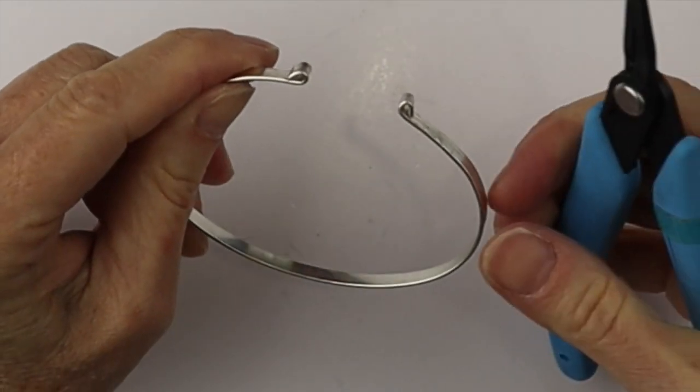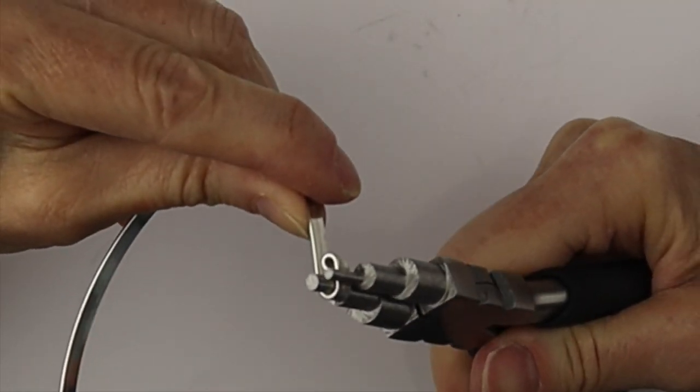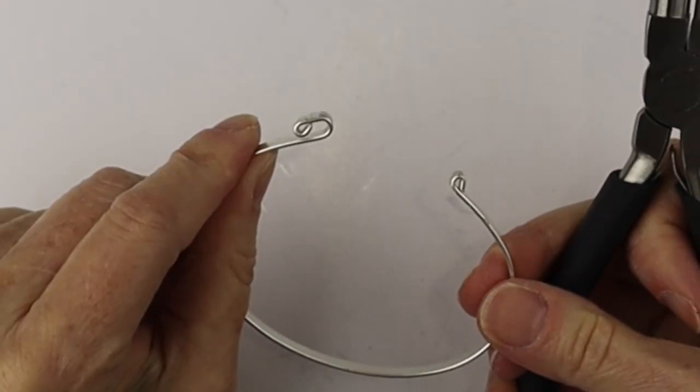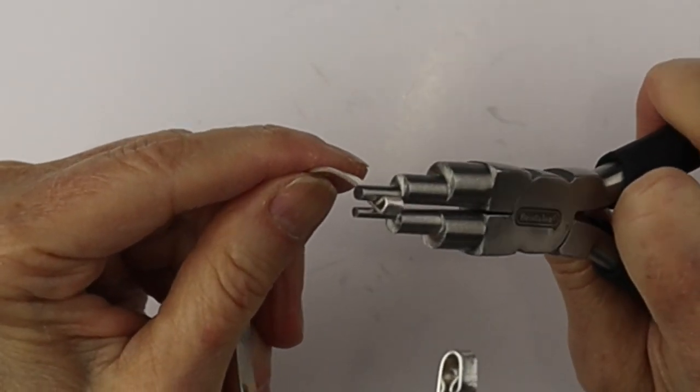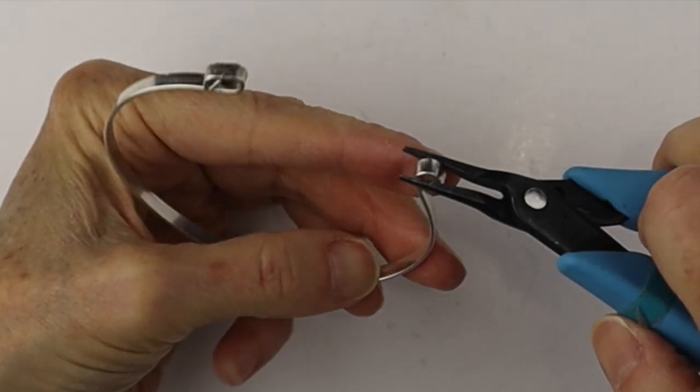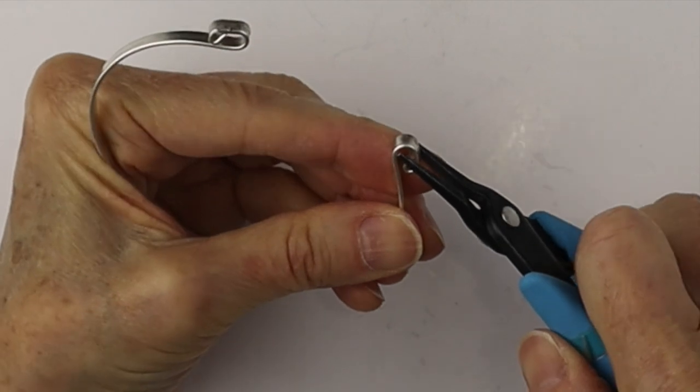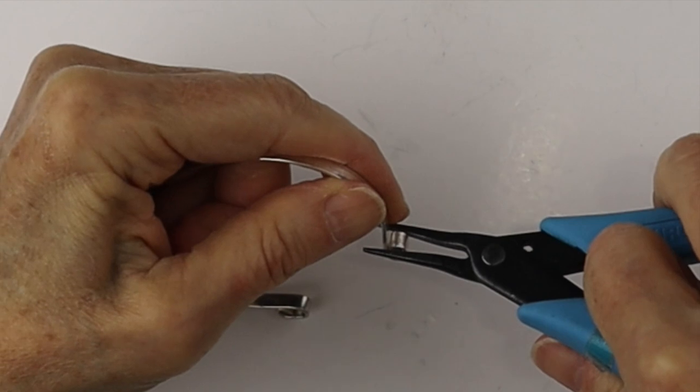Now we're going to get the larger area of our looping pliers and bend it around again to form a little hook. Same on the other side, the same size. So that's our basic shape. You can adjust it with the flat pliers just to make sure they're nice and straight. Same on the other side, straighten it up a little bit.